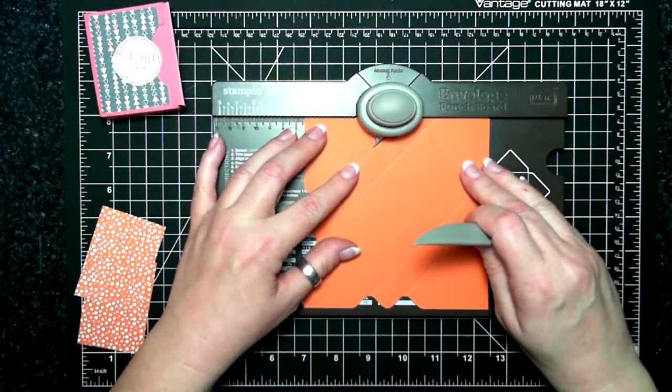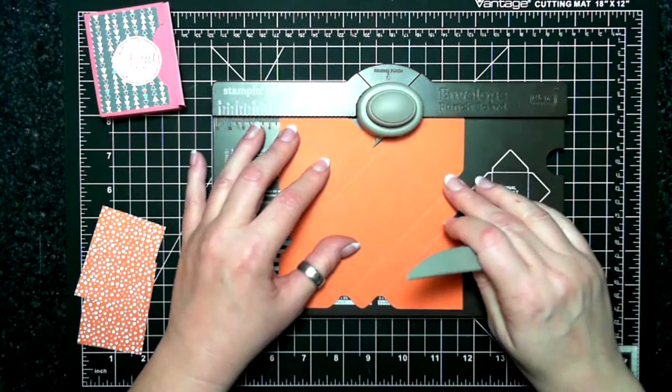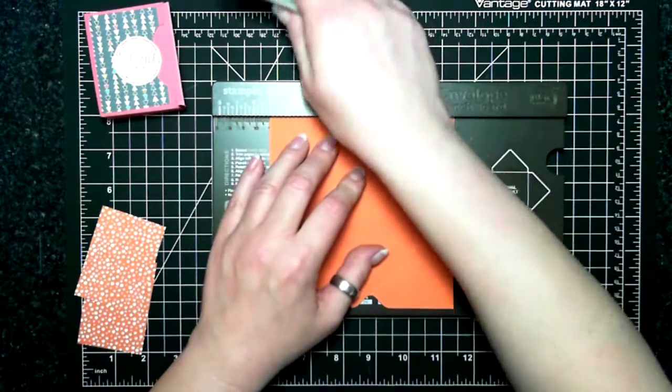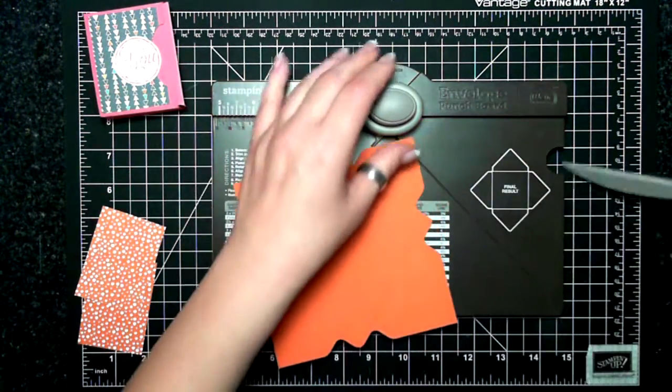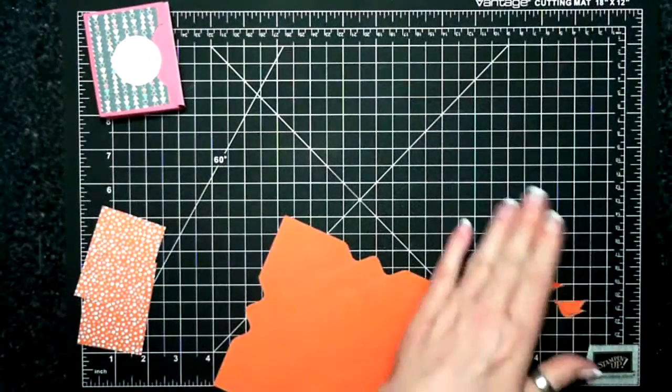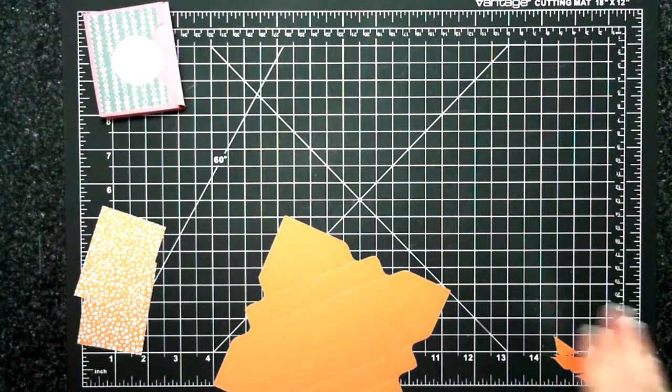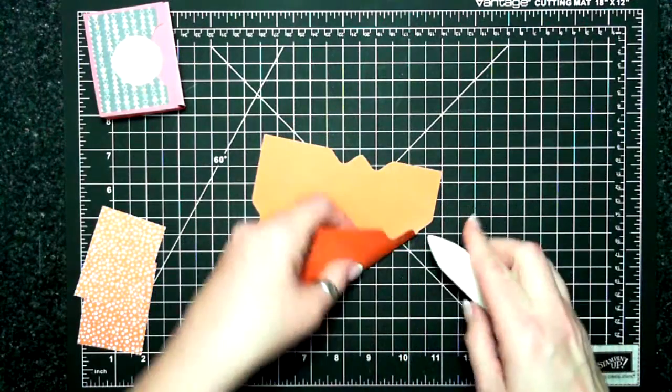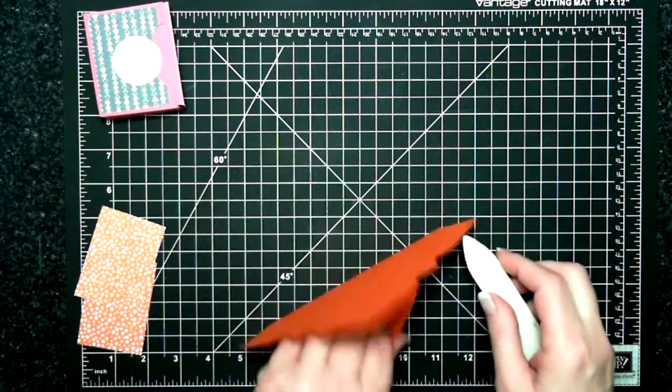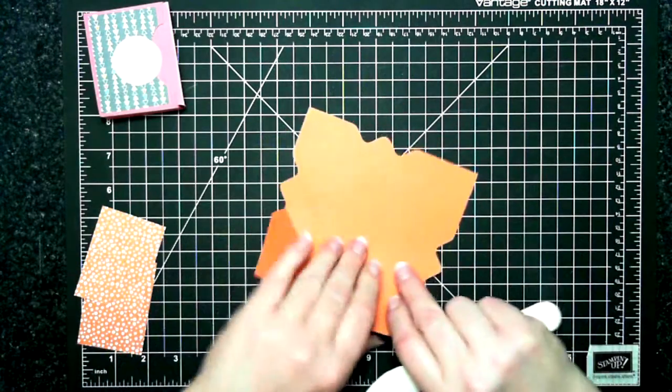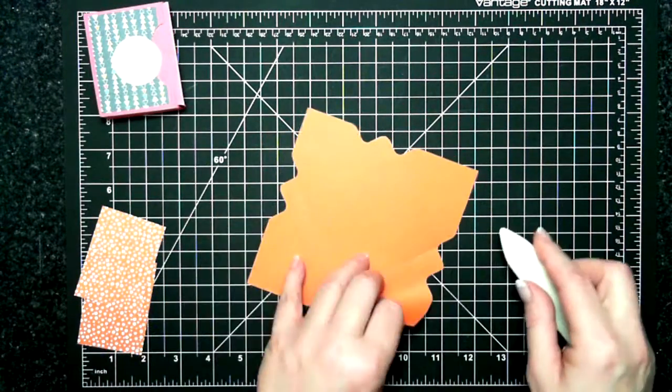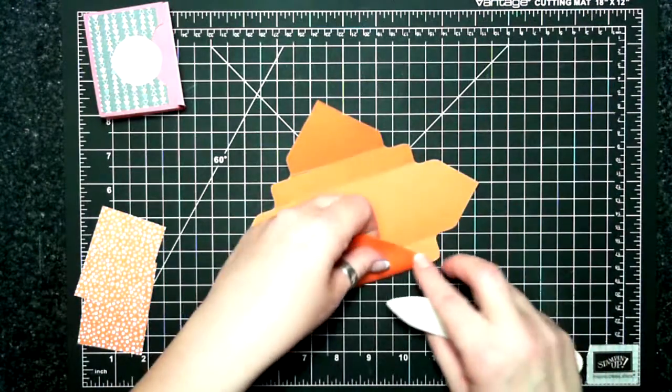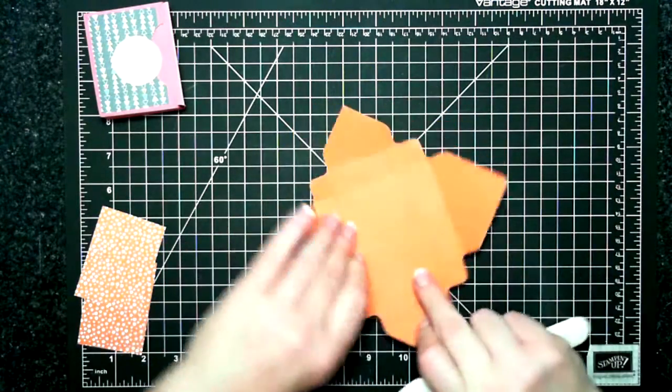Once more. I haven't done an envelope punch board box in a while so I figured this one would be kind of cute to do. All right I don't need any more, bring out my bone folder and I'm just going to burnish fold and burnish those crease lines.